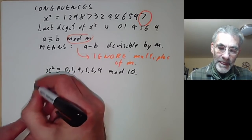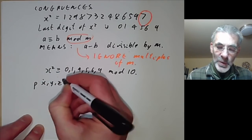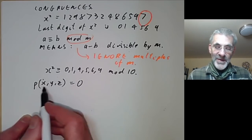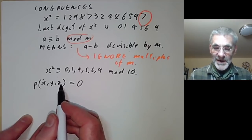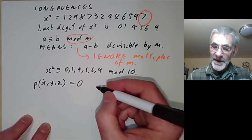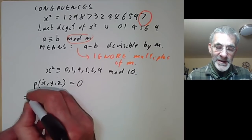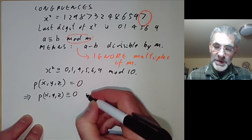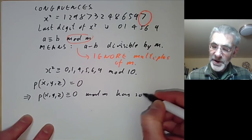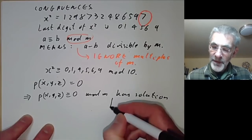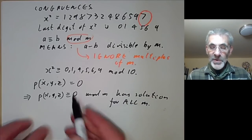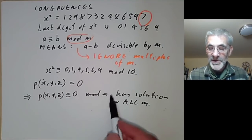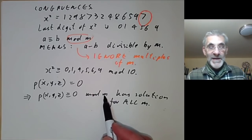In particular, if we have a polynomial Diophantine equation p(x, y, z) equals 0, and it has a solution in integers, then p(x, y, z) is congruent to 0 mod m must be solvable for all integers m. So you can often show a Diophantine equation has no solution by showing it has no solution modulo, say, 73.